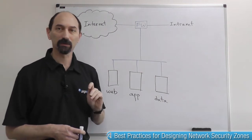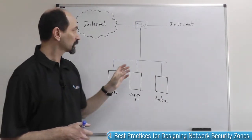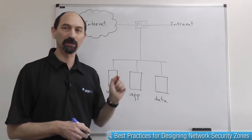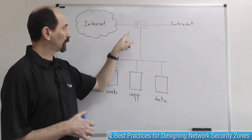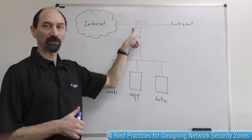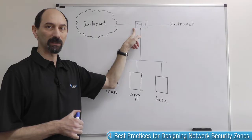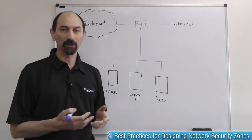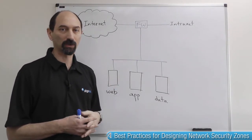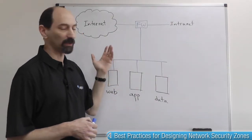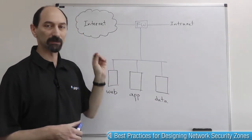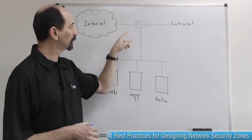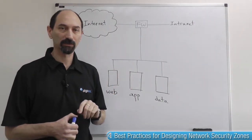Traffic between them is completely unfiltered — it doesn't go through the firewall, so that's not good. Also, this firewall is, from a security point of view, a single point of failure. If you misconfigure that firewall in any way, your network potentially becomes wide open. Research shows that 95% of firewall breaches are really caused by misconfiguration of a firewall, so getting that right is crucial.